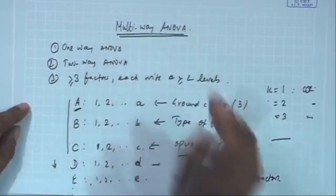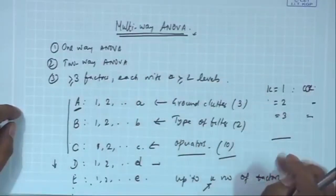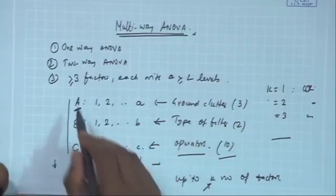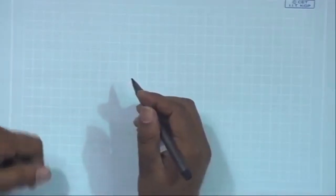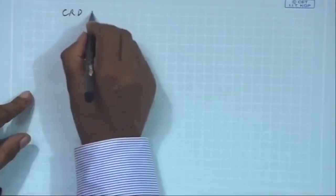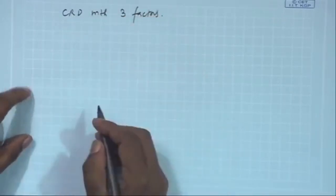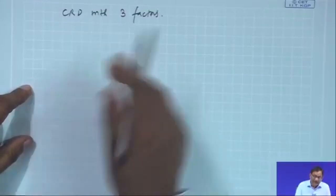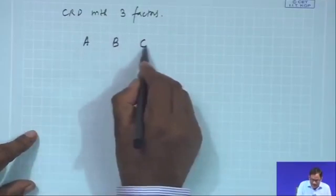When we are talking about multi-way ANOVA, we are basically considering an experiment with multiple factors, which means three or more number of factors. So, there is a Complete Randomized Design (CRD) with three factors. What will be your data set — that is, what will be your experimental settings? The factors are A, B, and C.